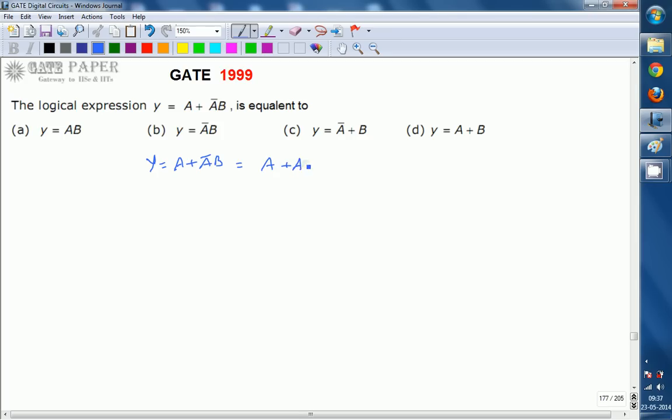You can write it as A plus A bar multiplied by B. That can be written as A plus B. So this can be written as (A plus A bar) into (A plus B), and A plus A bar is equal to 1.